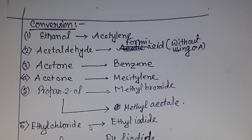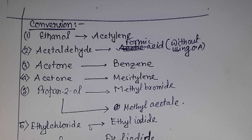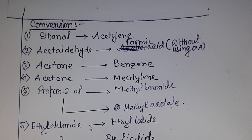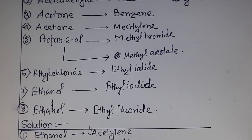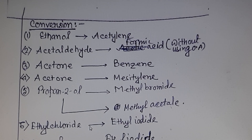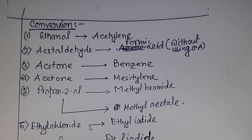Welcome friends, today we are going to discuss some problems on the topic I covered yesterday. I have given a few conversions — all these conversions are listed here, you can see. From ethanol to acetylene, acetaldehyde to formic acid — and the point to be noted: without using any oxidizing agent, acetaldehyde to formic acid — you cannot use any oxidizing agent directly.